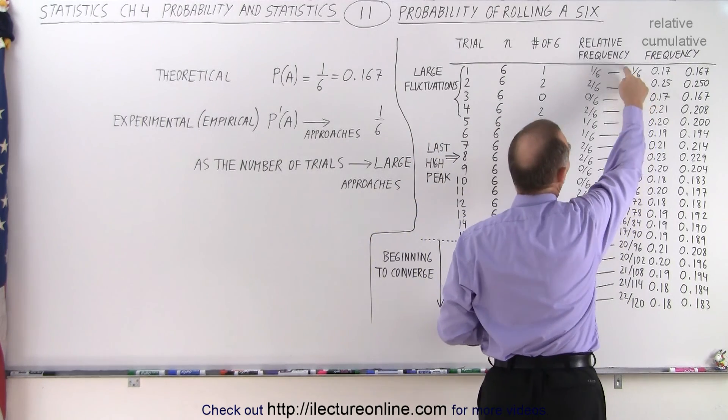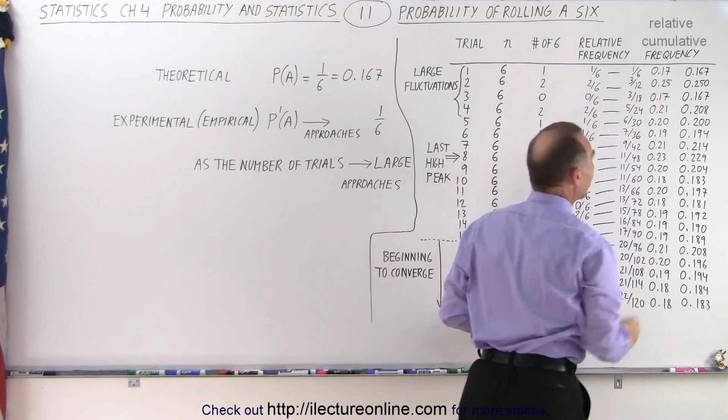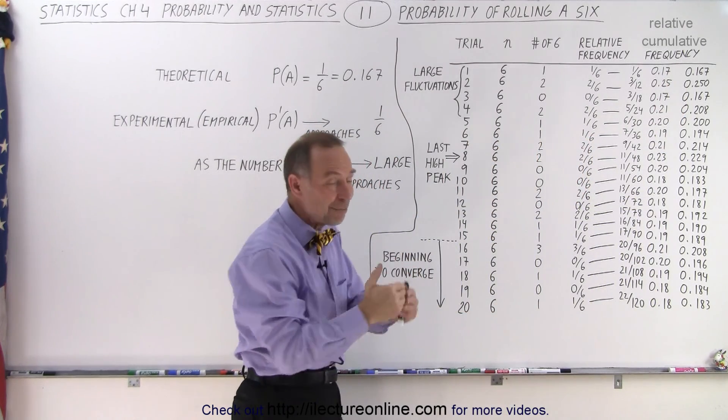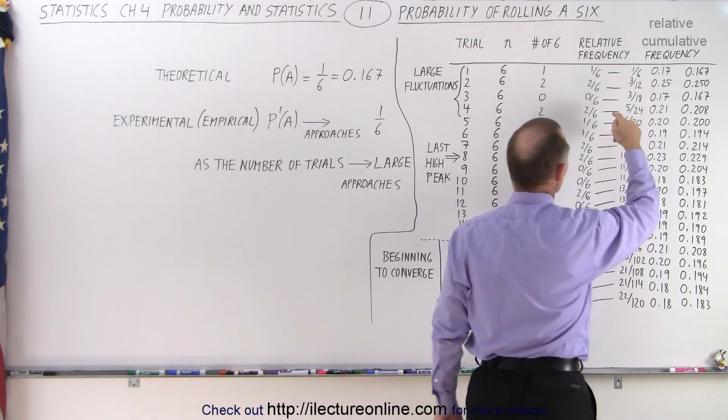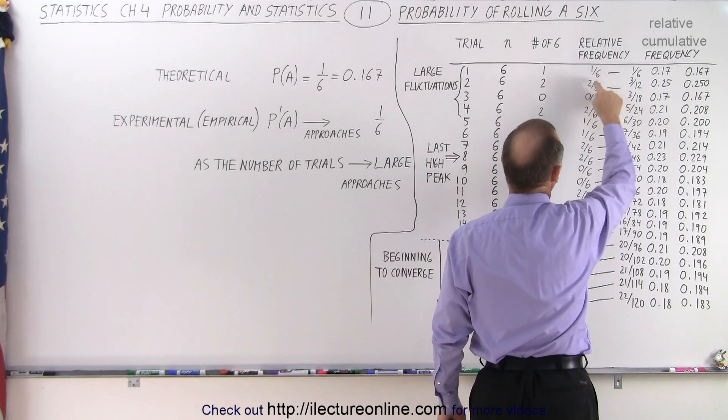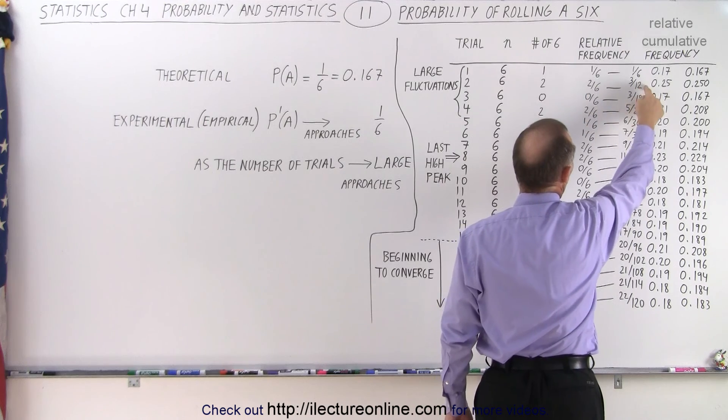So notice here we had one out of six. That happened to be where the theoretical probability exactly matched the empirical probability. But then we threw it a second six times, and notice now we have three sixes out of a total of 12 trials.